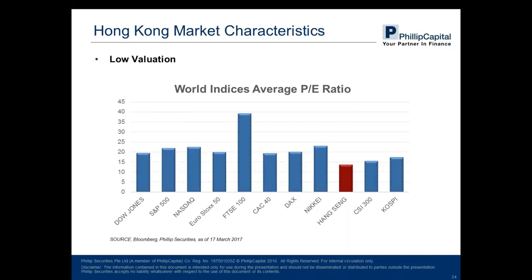Let's move on to Hong Kong. We will talk about the Hong Kong market characteristics, making a comparison of the world indices' average PE ratios — the US, Europe, England, France, Germany, Japan, China A-shares, and Korea. The value of the Hang Seng index's PE ratio is very low, meaning stocks in the Hong Kong market have investment value because of their cheap prices and potential for growth.